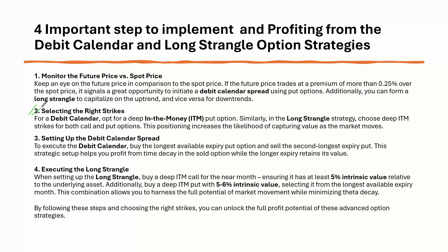The second step is how you should select the correct strike options for your long strangle and debit calendar. In the first step, by monitoring the future price and spot price, you decide whether the debit calendar will be in the put option or the call option. If the future maintains a premium above 0.25 percent, the debit calendar should be on put options and the long strangle should be initiated to benefit from the uptrend.